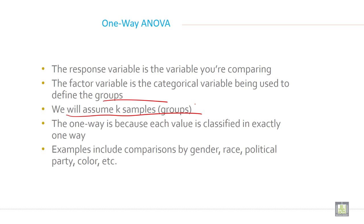We will assume k samples here. And the one way is because each value is classified in exactly one way. Examples include comparison by gender, race, political party, color, etc.